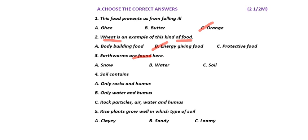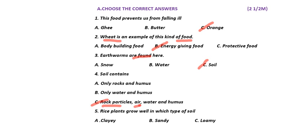Earthworms are found where — snow, water, or soil? The answer is soil. So the third answer is C. Fourth question: soil contains only rocks and humus, only water and humus, or option C — rock particles, air, water and humus? Option C is the answer. Soil contains rock particles, air, water and humus — everything. So the fourth answer is C.